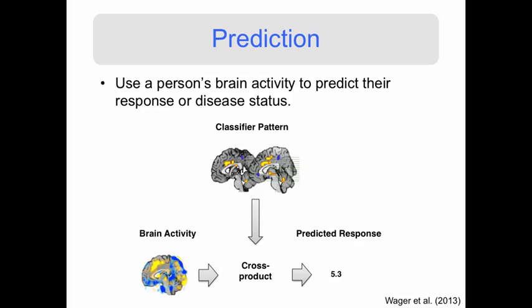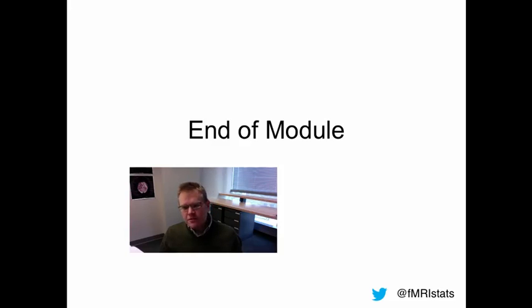There's also been a lot of interest recently in using a person's brain activation to predict their response or disease status. For example, can we use a person's fMRI data to predict how much pain they're feeling, or whether they're at risk for a disease such as early-onset Alzheimer's? That's the end of the first module. The next module will be all about MR physics, and I hope to see you there.